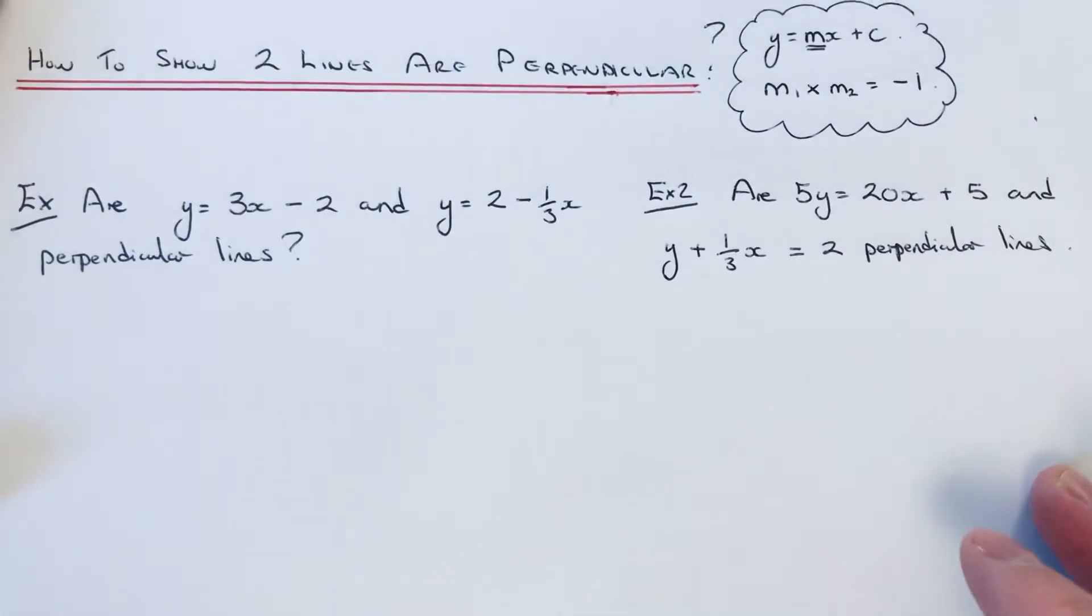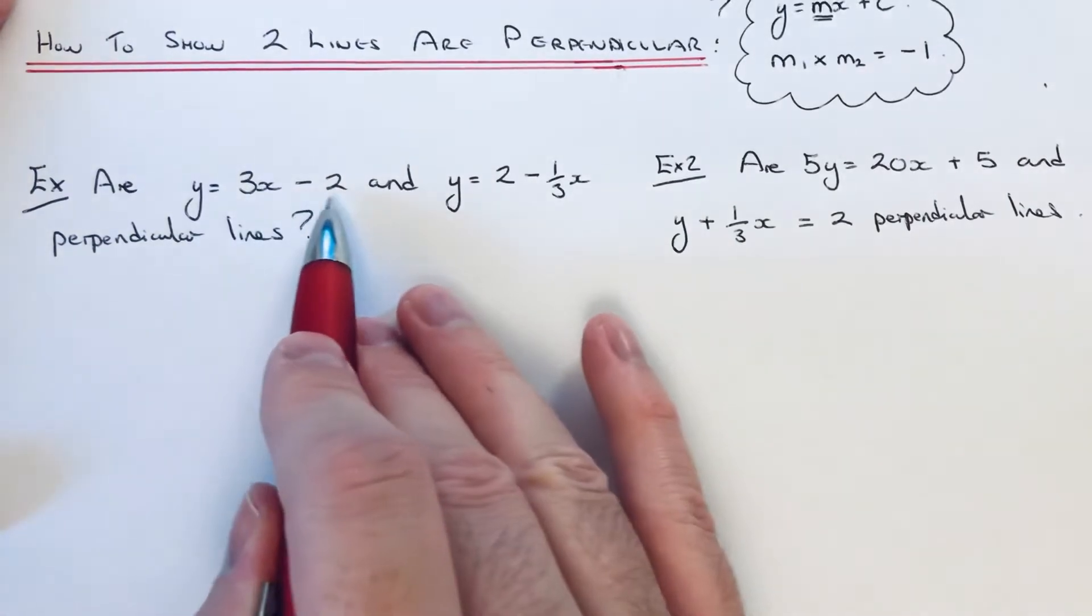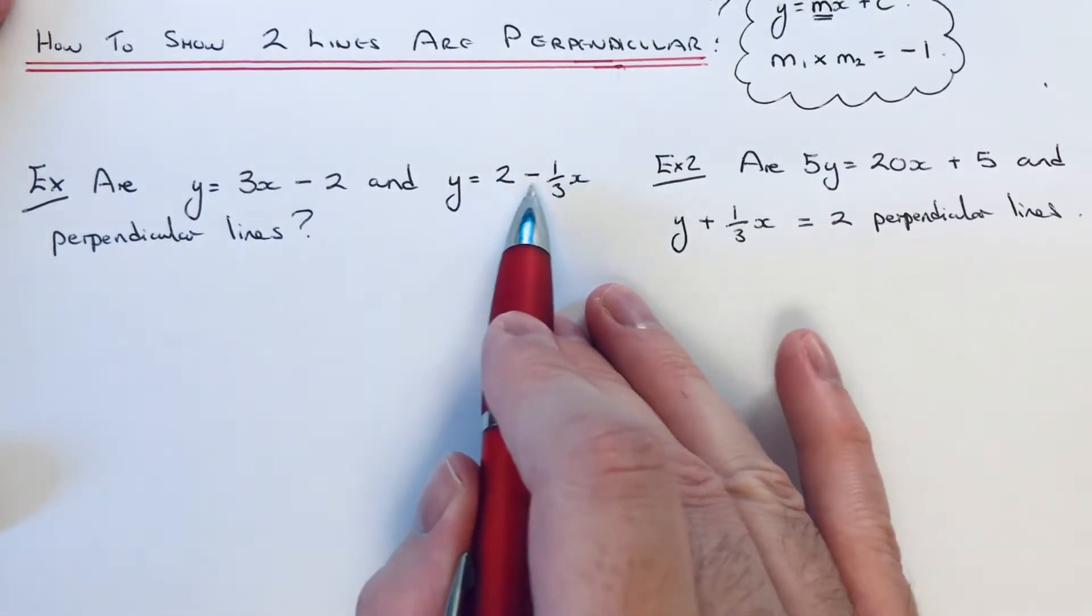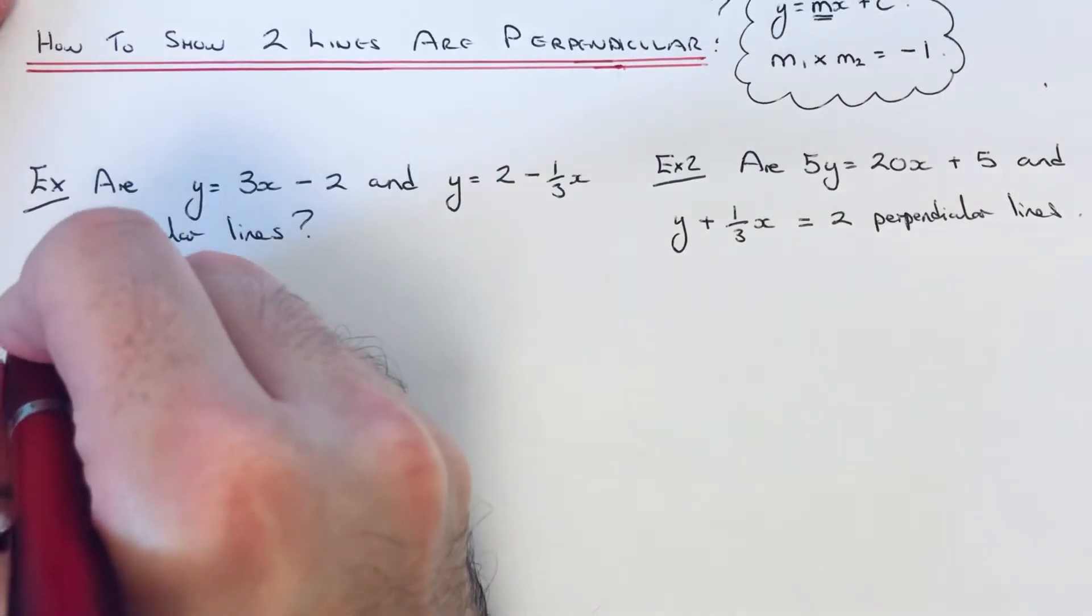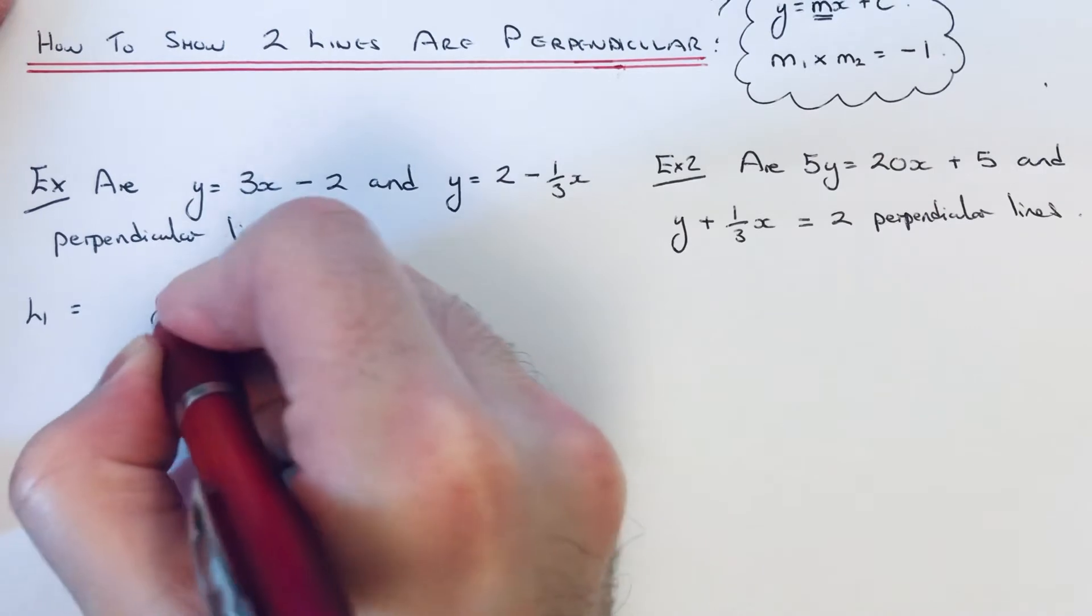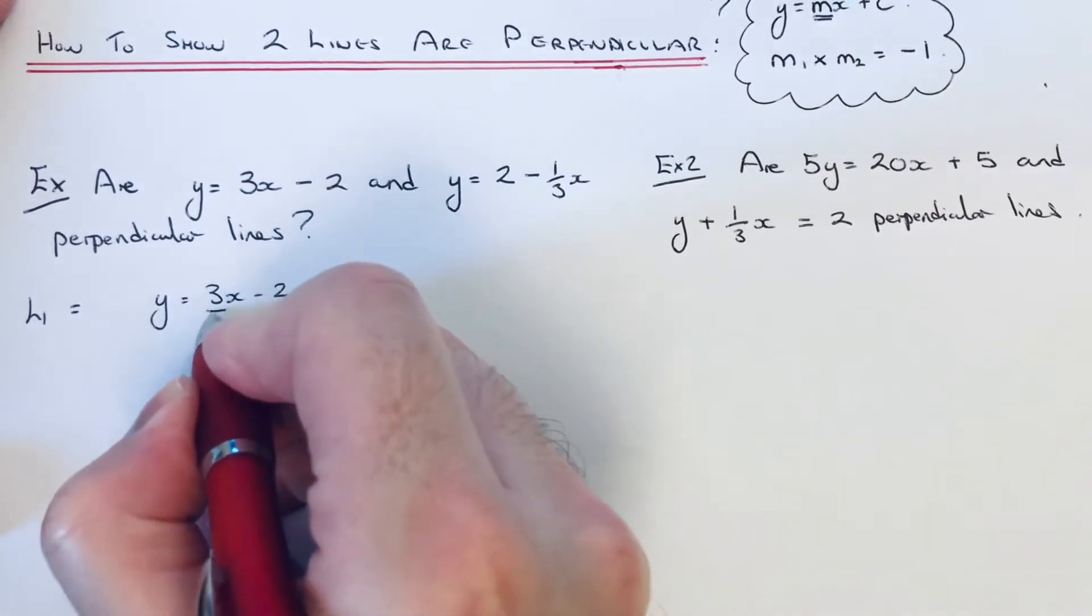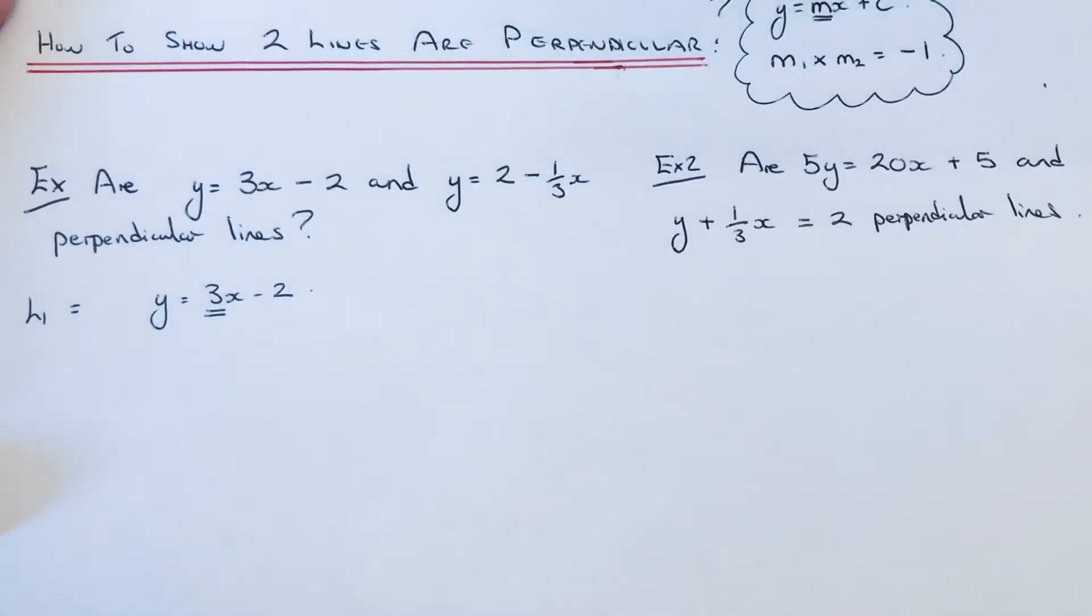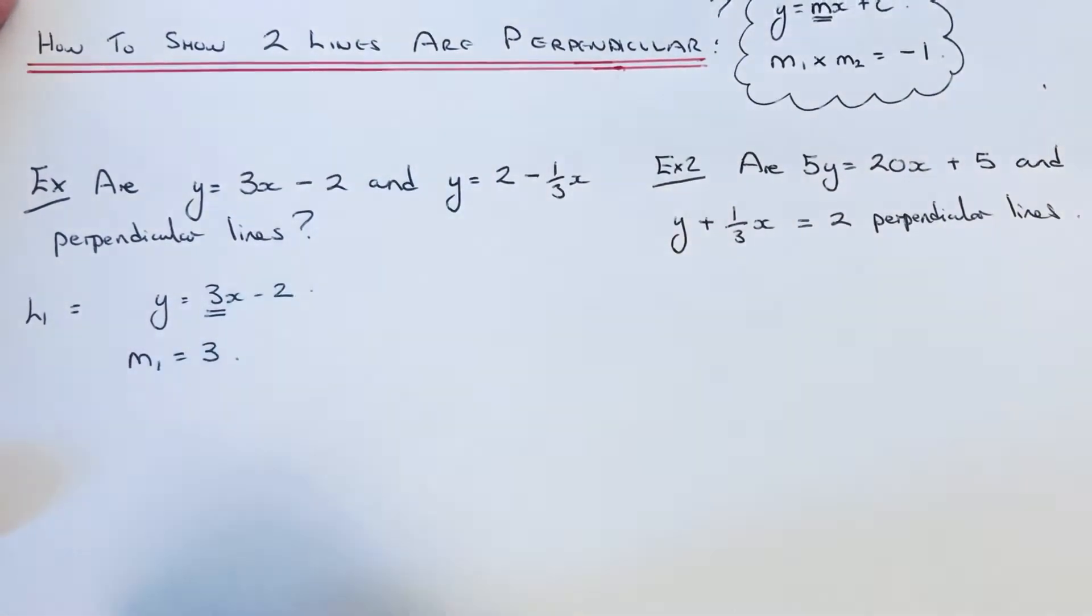So let's have a look at the first example. So are y=3x-2 and y=2-⅓x perpendicular lines? So let's start off with our first line, which is y=3x-2. So the gradient of this line is 3, because the number before x is 3.